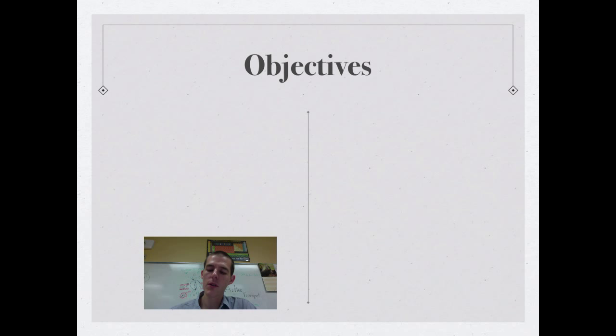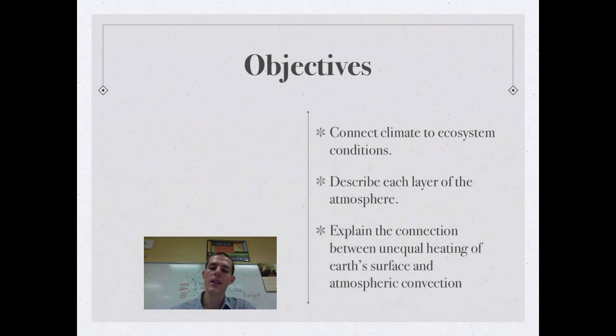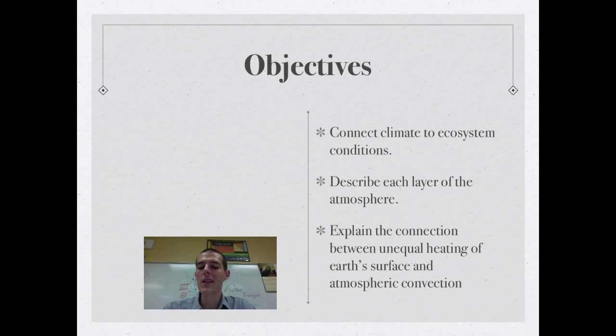By the end of this video, know or be able to do the following. First up, connect climate to ecosystem conditions. Second, describe each layer of the atmosphere. And finally, explain the connection between unequal heating of Earth's surface and atmospheric convection. Lots of things to cover today.